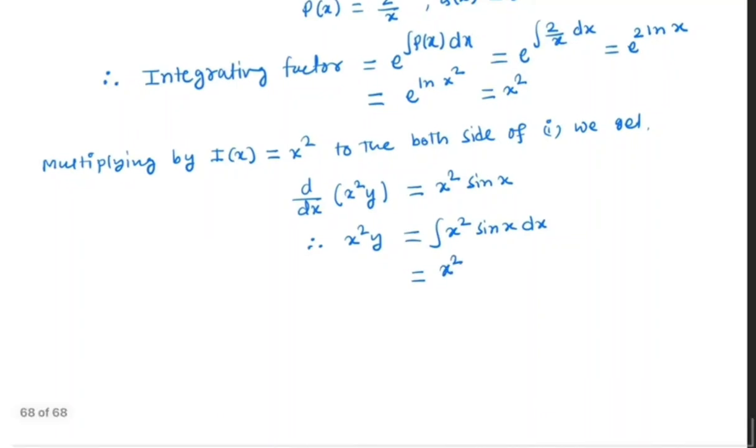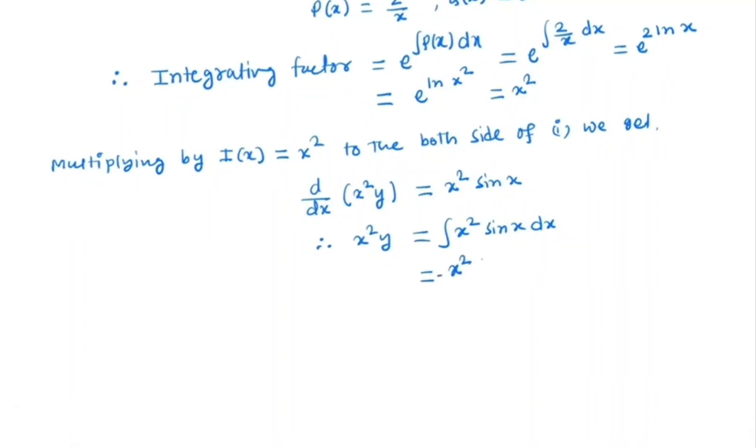We have x squared times integral of sin x, which is minus cos x, minus derivative of x squared times integral of sin x. So we have minus x squared cos x plus 2 times integral x cos x.